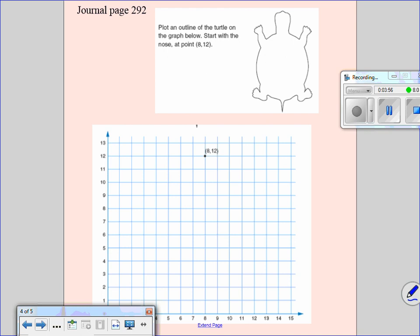This is what I want you to do right now. Before you come to class tomorrow, I want you to take what I just taught you and I want you to draw this turtle. I want you to take the coordinates or the ordered pairs I'm going to give you on the next page and I want you to come back with the completed turtle that's on your workbook page 292.